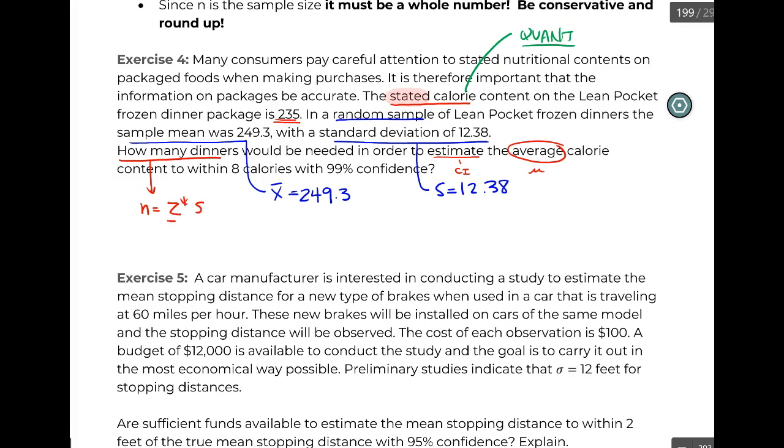Our n is z-star times s all over our margin of error, this entire quantity squared. Of course, I could have kept reading, but I went ahead and figured out what I was looking for first.